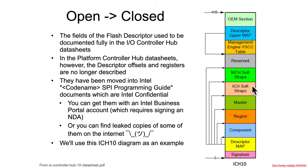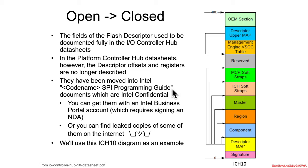Previously, the description of how exactly the flash descriptor was laid out was provided in IO controller hub data sheets, but over time those details moved into SPI programming guides for a given piece of hardware — named things like the Skylake SPI programming guide or the Haswell SPI programming guide. Unfortunately, those documents are Intel confidential.